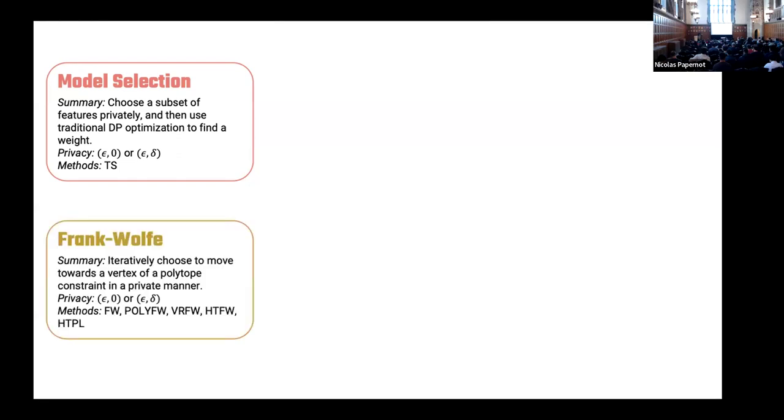The next methods use the Frank-Wolfe algorithm, which is a pretty old optimization algorithm developed, I believe, in 1956. The Frank-Wolfe algorithm iteratively chooses to move towards a vertex of a polytope constraint in a private manner. That's a lot of words, but it's actually very simple. Wherever you are in your loss space, take a first-order Taylor approximation, and then just move towards the vertex of your constrained L1 ball a little bit. You do this iteratively, and you will achieve a good solution.